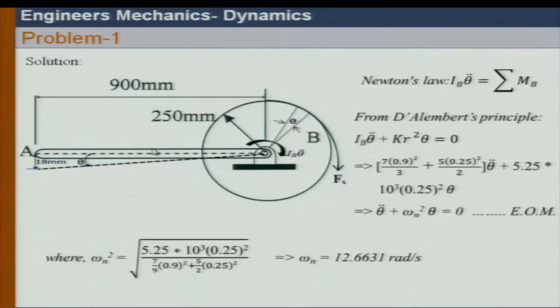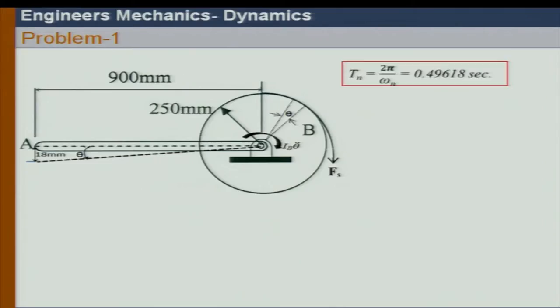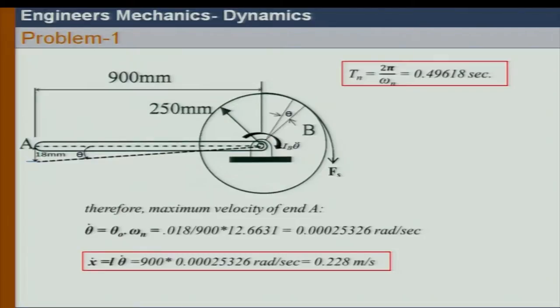Remember, in the mass here you can also show the mass as a lumped mass with a translatory force and the inertia force — that can also be done. The ultimate effect will be M L square over 3. So ultimately we have the time period of oscillation at 0.496, and maximum velocity at end A. Remember how we calculate that — we know the solution for theta, and theta_0 is given.